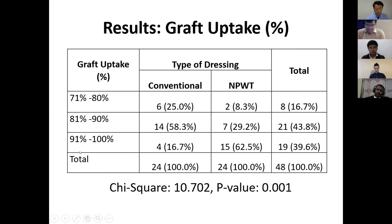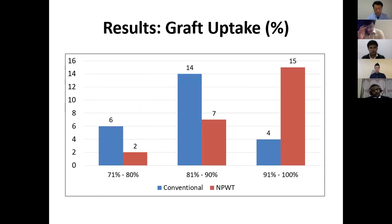A 90 to 100% graft uptake was seen in about 15 patients in the negative pressure wound therapy group, whereas in the conventional group it was only 4 patients. The p-value is less than 0.005, specifically 0.001. The bar chart confirms the graft uptake results, showing clear superiority of NPWT.